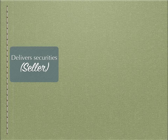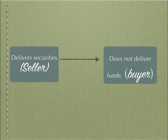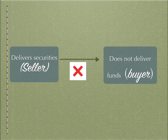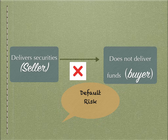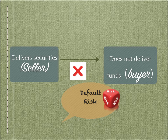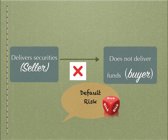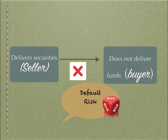Conversely, what happens if the seller delivers the securities but the buyer does not pay the funds? This is also a problem and can be called counterparty risk or default risk — both terms are used interchangeably to describe the situation where the buyer or seller fails to fulfill their obligations. The result of such failures is settlement failures.